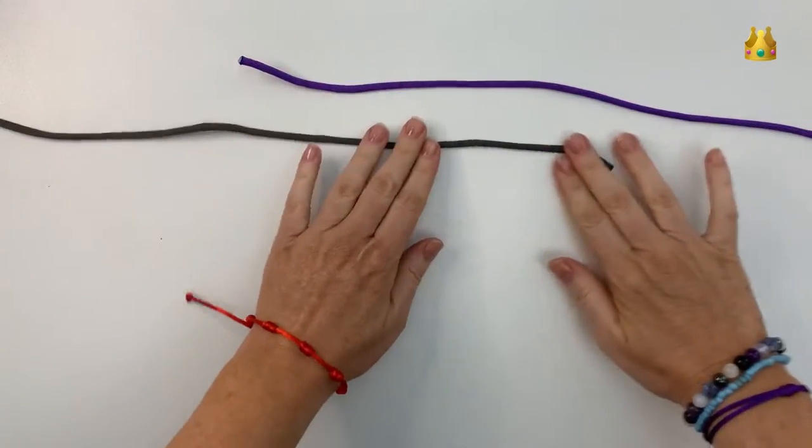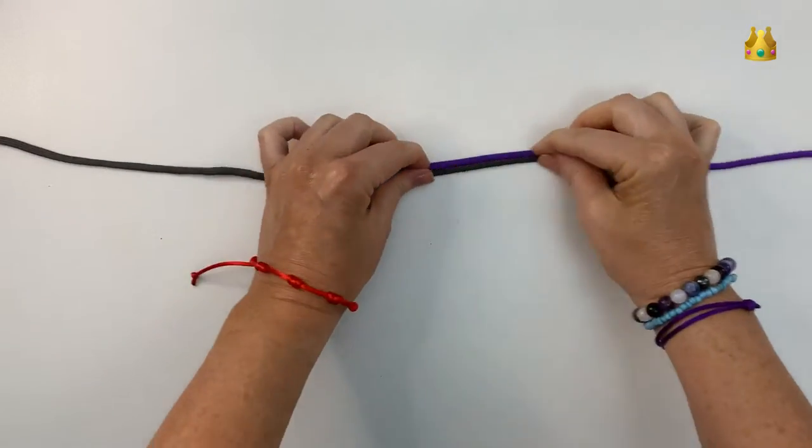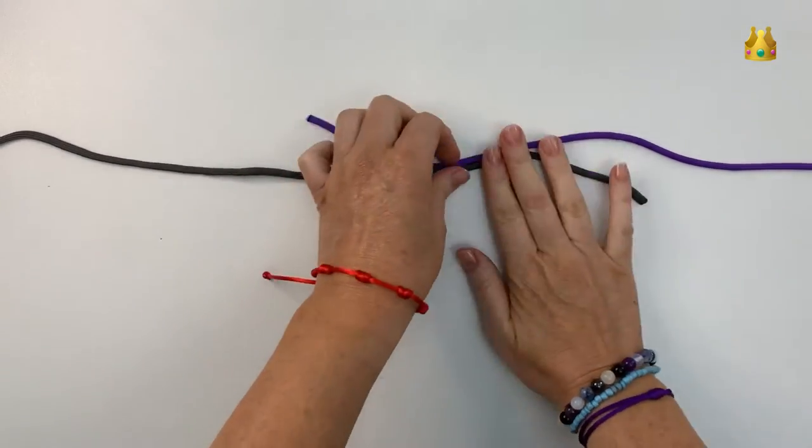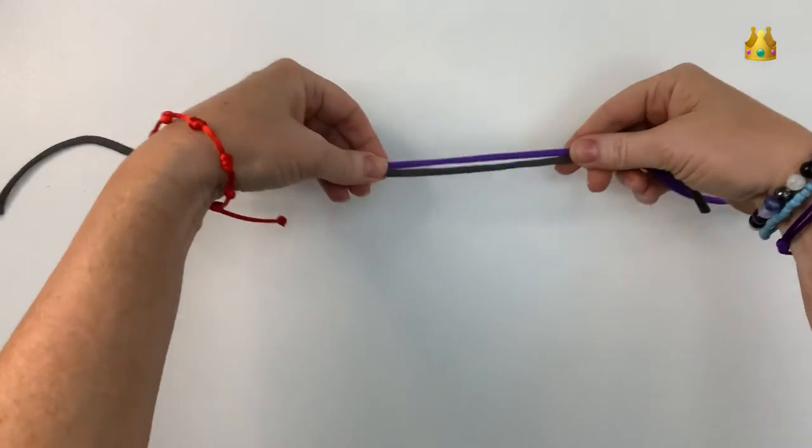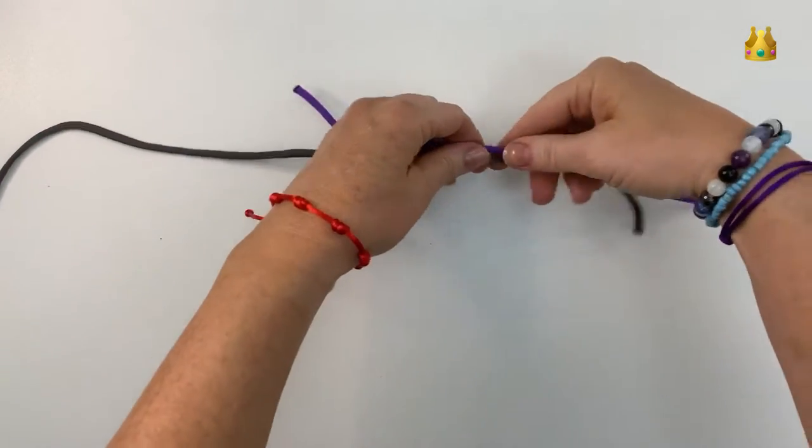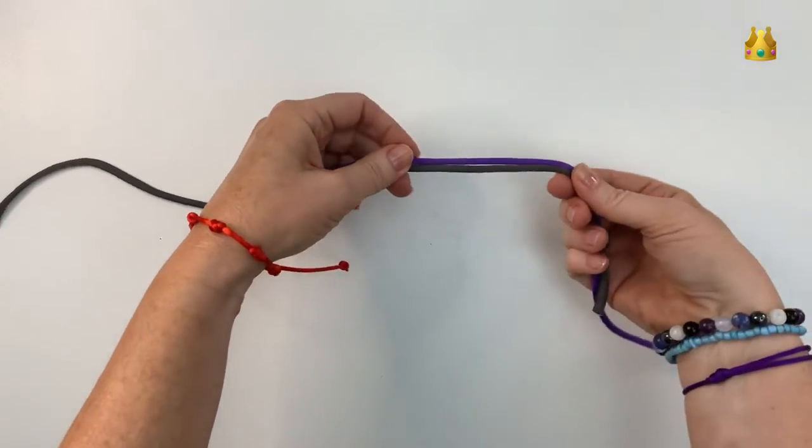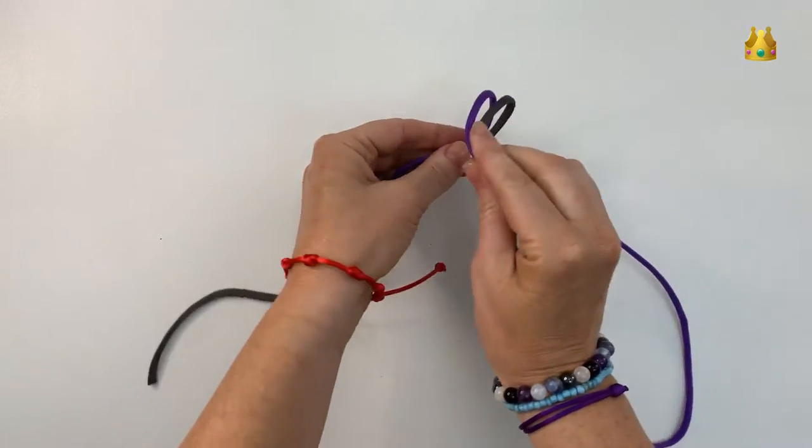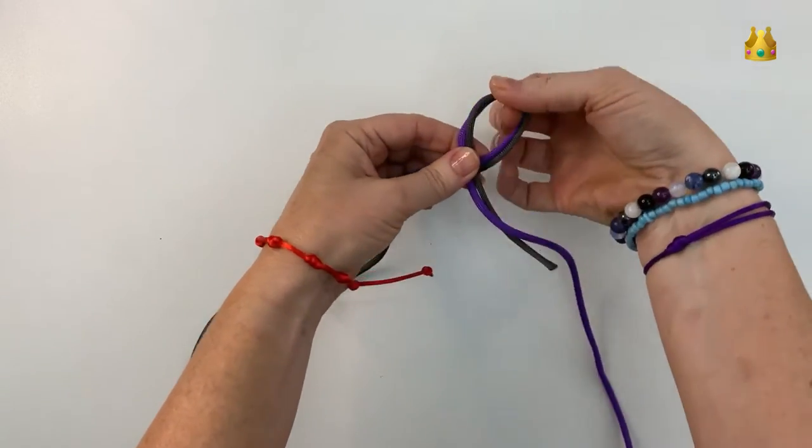Start by laying your cords down and overlapping your ends in the middle. Now we're going to make a loop in the middle here, so bringing this right side around and over top of the left side, making sure we've got both threads in this loop.